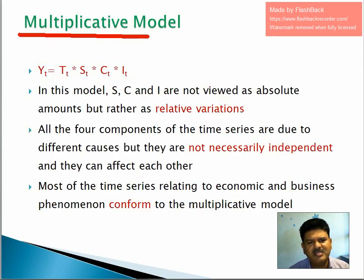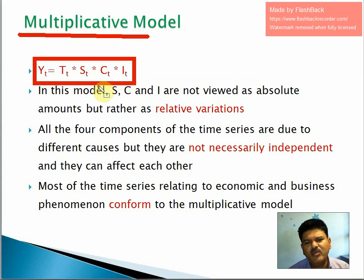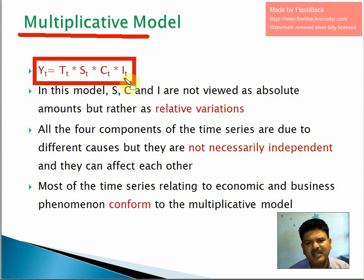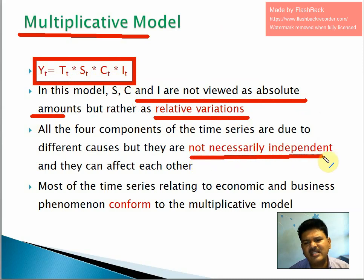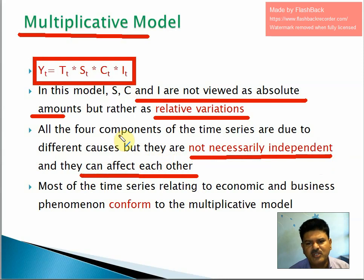The second model is the multiplicative model. In the multiplicative model, we take the multiplication of all components: Y_t = T_t × S_t × C_t × I_t. Here, S, C, and I are not viewed as absolute amounts but rather as relative variables, because they are not necessarily independent and can affect each other. There is a mutual contribution of trend, seasonal variation, and cyclical variation, so they are dependent on each other.